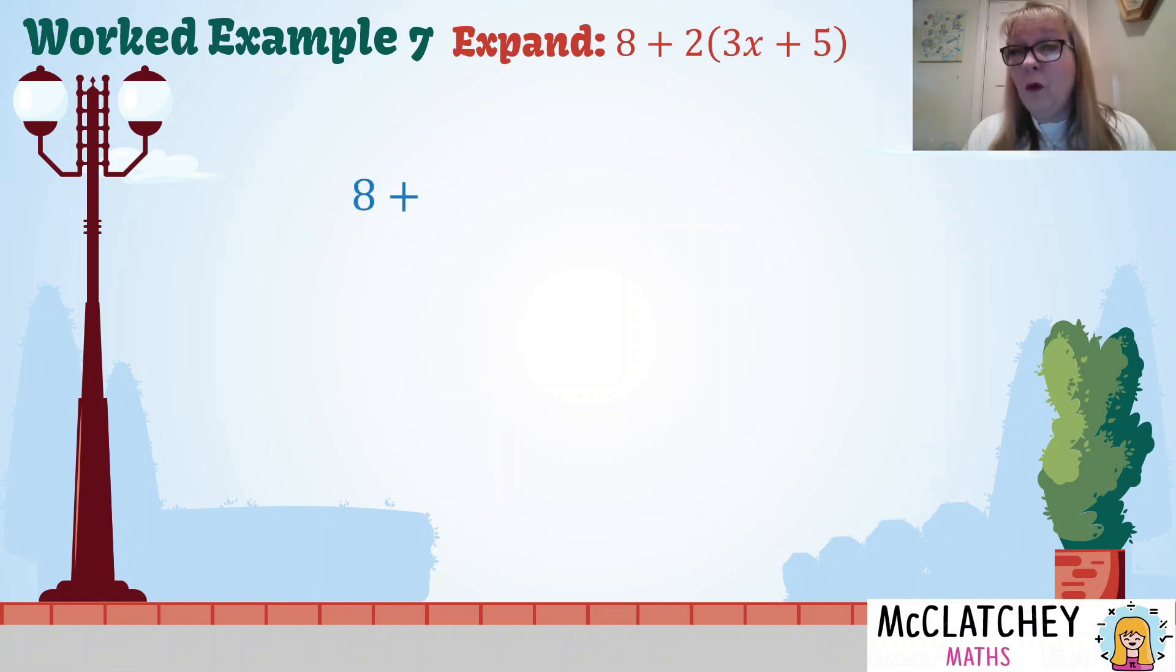2 times 3x makes 6x. 2 times 5 makes 10. If I'd added the 8 and the 2 first I would have had 10 times 3x, 10 times 5, which is a vastly different answer. So just remember it's only the 2 being multiplied. So now I've got some like terms here, I've got an 8 and I've got a 10. Let's add those together to 18 plus 6x.